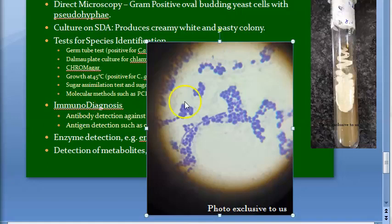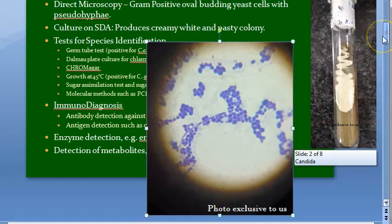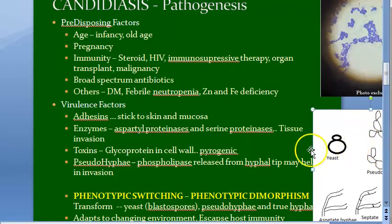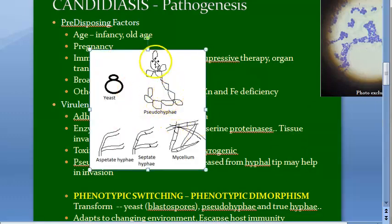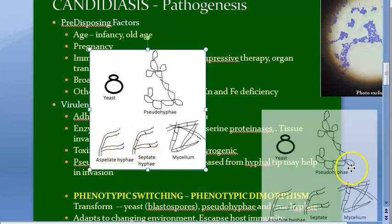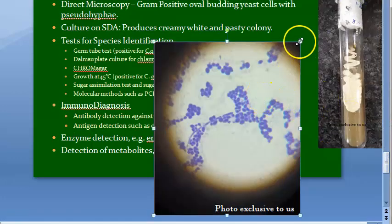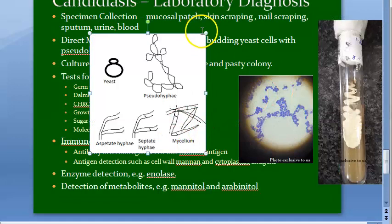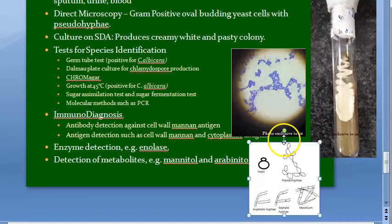In pseudohyphae, the septa are constricted and the origin of branches are constricted and septate; it grows by budding. In true hyphae there are no constrictions — true hyphae grow by apical elongation. You can draw both diagrams in your exam answer to show you know the difference between hyphae and pseudohyphae.